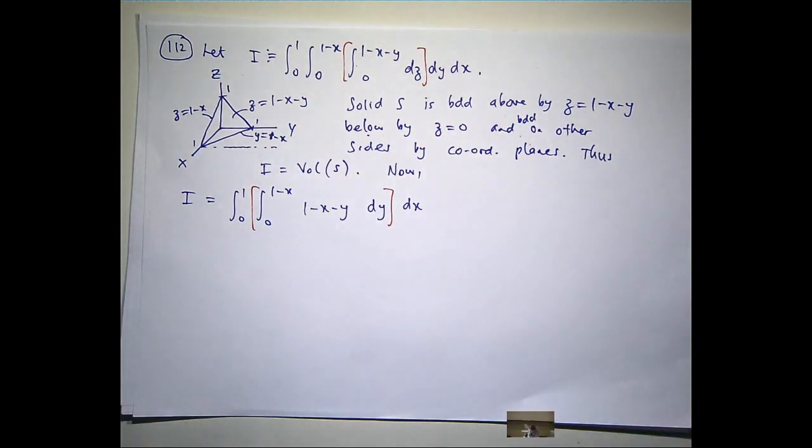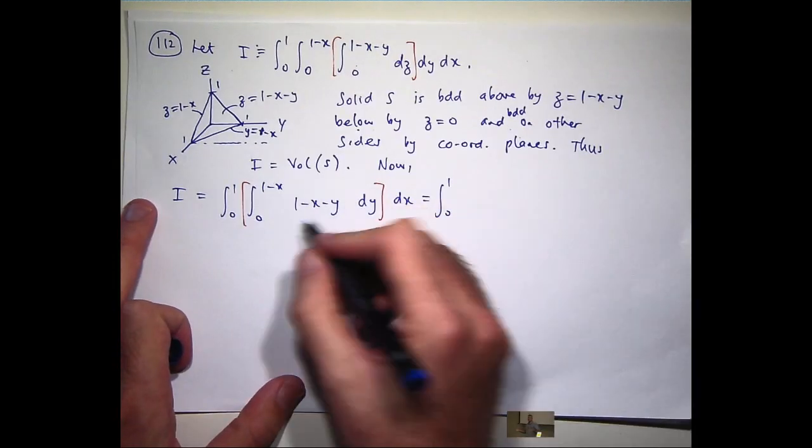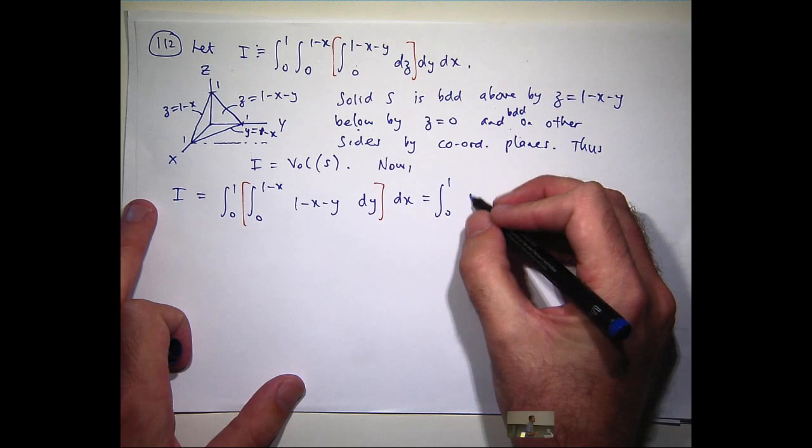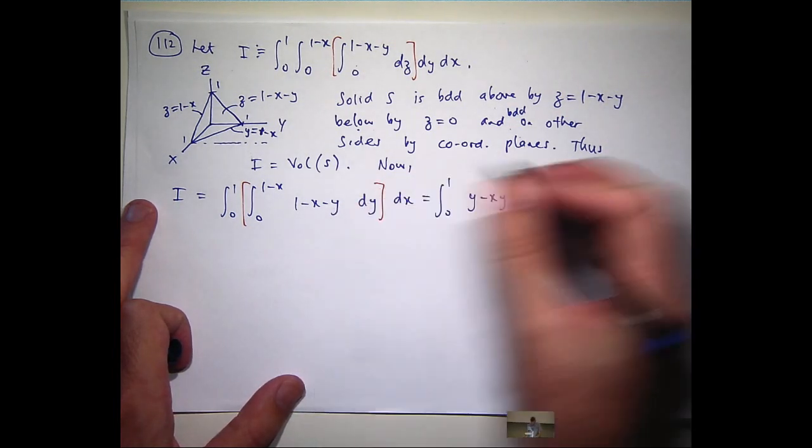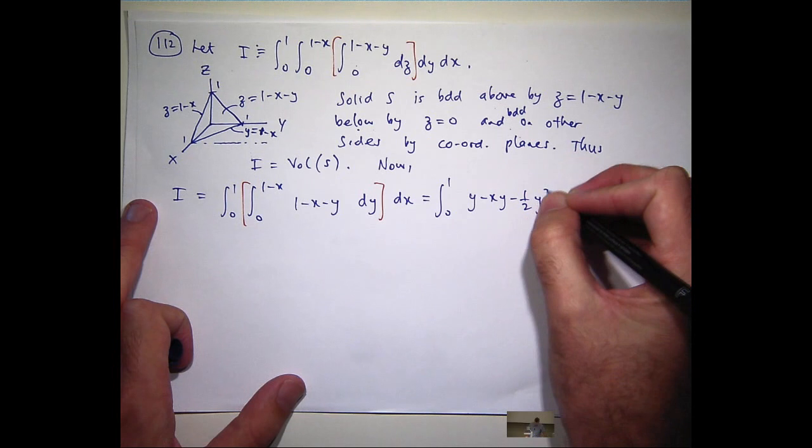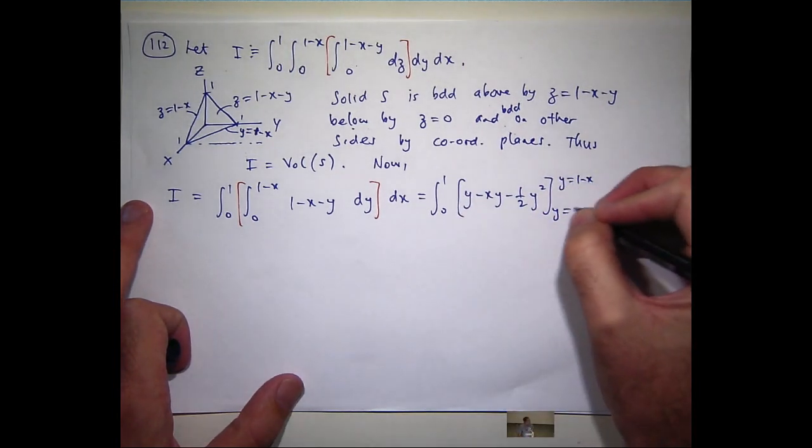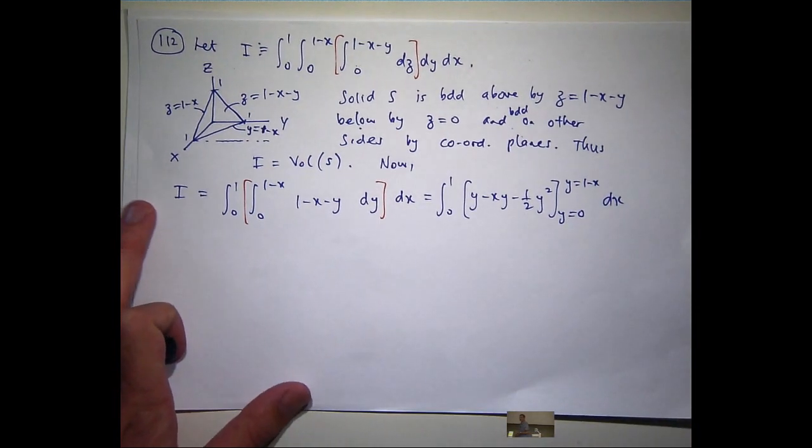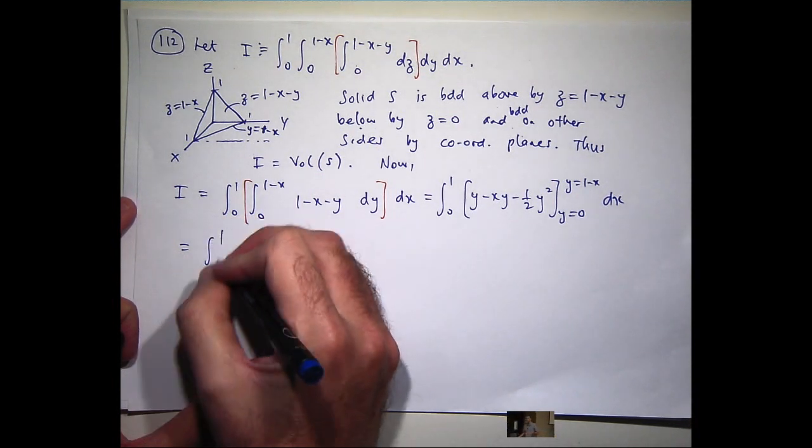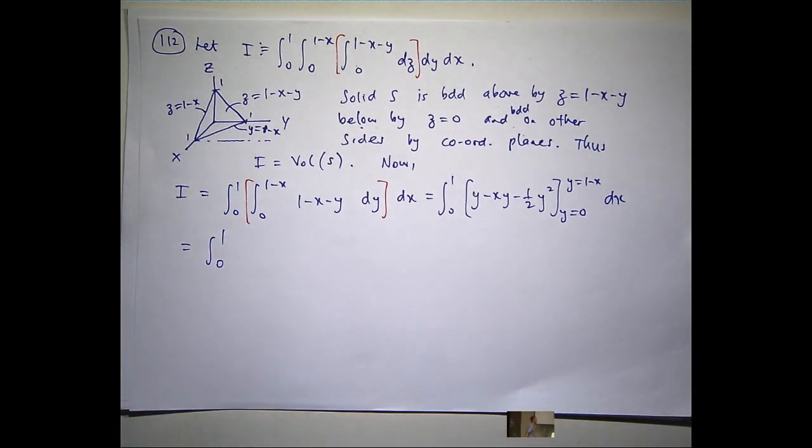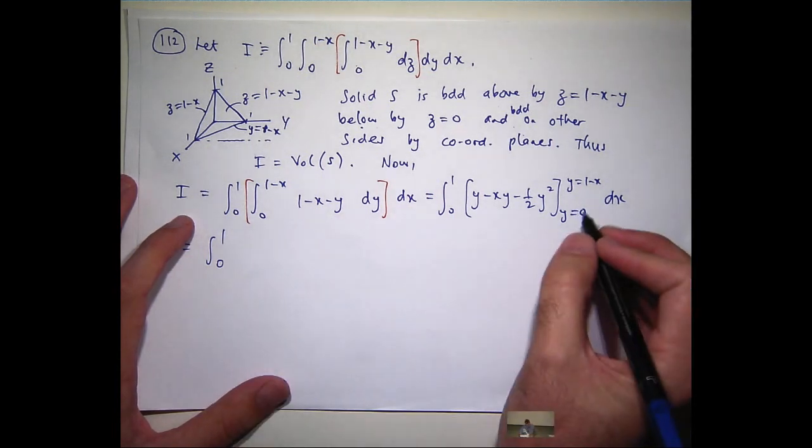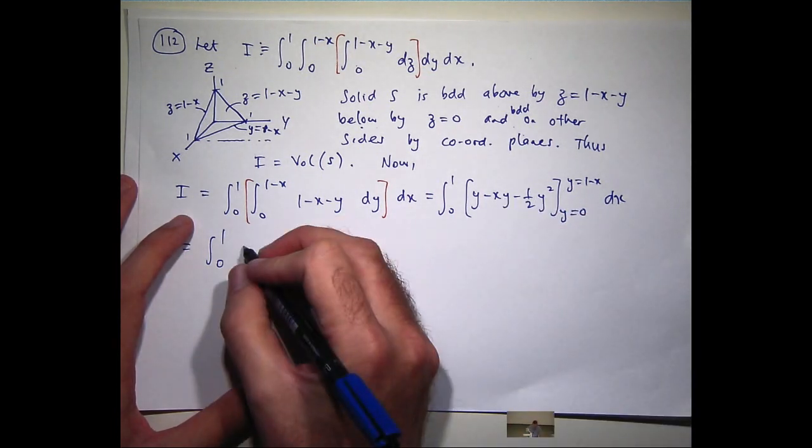So, now I want to just do the inside integral in my bottom line. So, I want to hold all the x's constant and integrate with respect to y. So, this is going to become y. This will become minus xy. And this will become minus a half y squared. So, now I'm going to sub in my limits of integration. When I sub in y equals 0, all the terms are going to be 0.